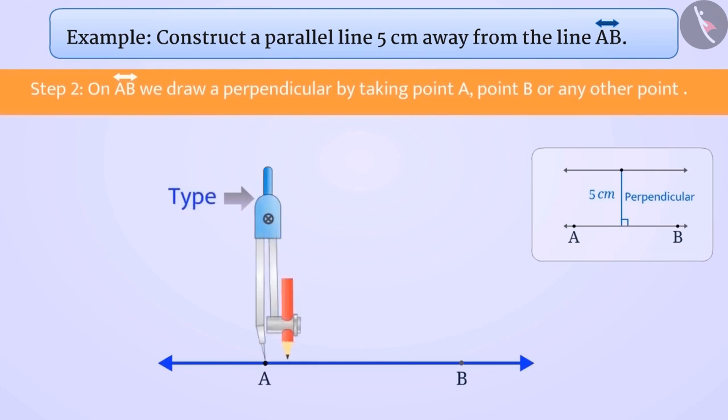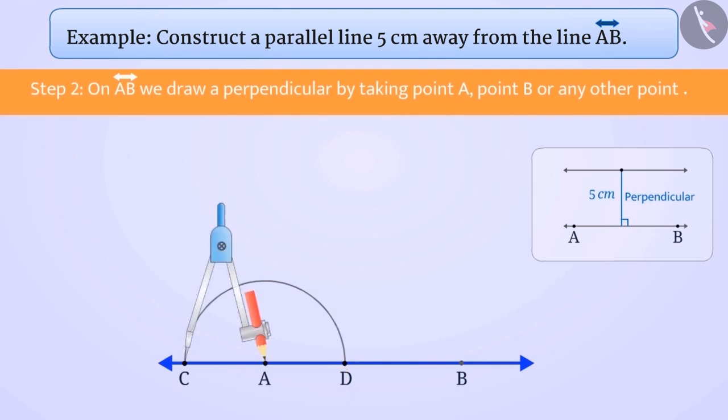First, place the compass at A and with a convenient radius, draw an arc cutting AB at points C and D. Without disturbing the radius on the compass, draw an arc with C as center which cuts CD at E, the point of intersection.